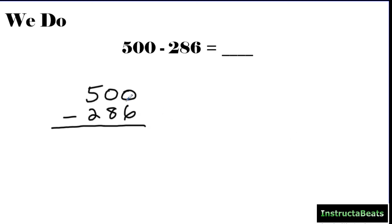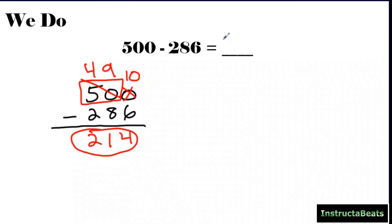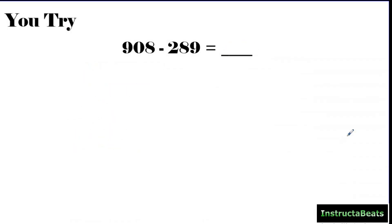Put the bigger number on top, line up the ones place, and go right to left. Zero ones minus six — can't do that; more on the floor go next door, but there's nothing in the tens place. So I come to the hundreds place and think about five hundreds as fifty tens, because fifty tens has the same value as five hundred — like fifty ten-dollar bills equaling five hundred dollars. I regroup one of those tens, making it forty-nine tens, and now I have ten ones. Ten minus six is four, nine tens minus eight tens is one ten, four hundreds minus two hundreds is two hundred. The difference between 500 and 286 is 214.